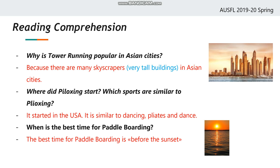Here are the answers to the questions. Why is tower running popular in Asian cities? Because there are many skyscrapers — very tall buildings — in Asian cities. In Istanbul we also have some very tall buildings called skyscrapers. Because of this, tower running is popular in Asian cities.